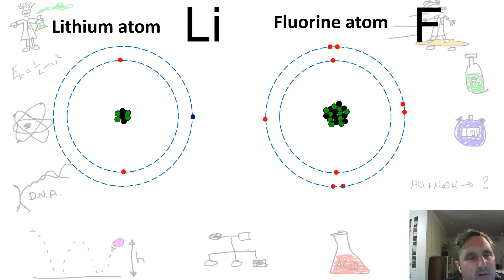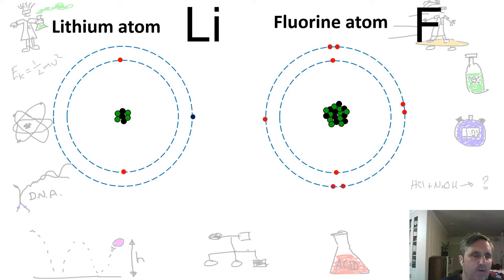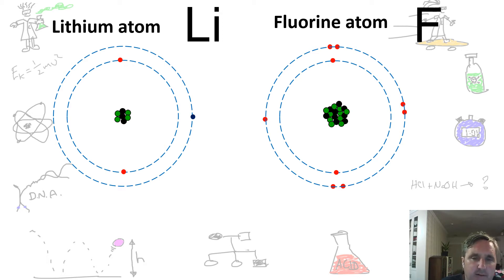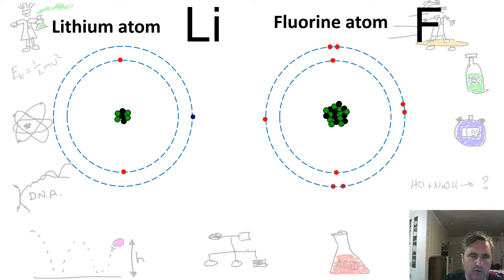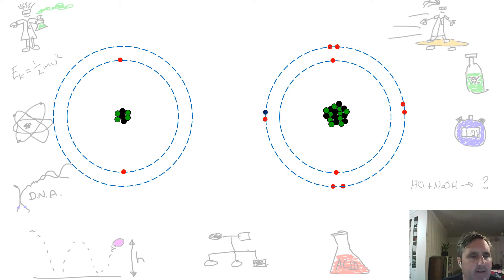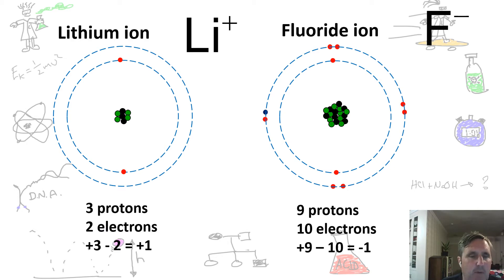So how does it actually do this? Where does this electron go? In order for a lithium atom to become a lithium ion, it has to give away its electron, but it can't give it away to empty space. It has to have something that wants to take the electron. If we look at this fluorine atom here, the fluorine atom has seven electrons on the outside. It's going to gain one electron because that's a lot easier than losing seven. So it accepts the electron.